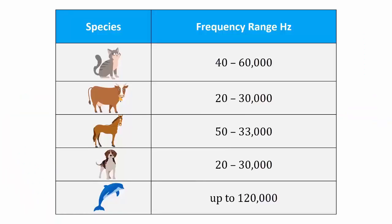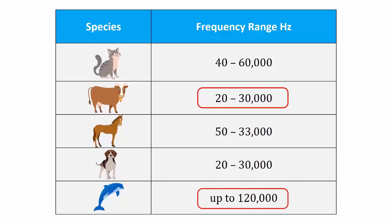The table shows the audible frequency range of some animals. According to this table, a cow can hear a frequency range of 20–30,000 Hz. A dolphin can hear a frequency range of up to 1,20,000 Hz.